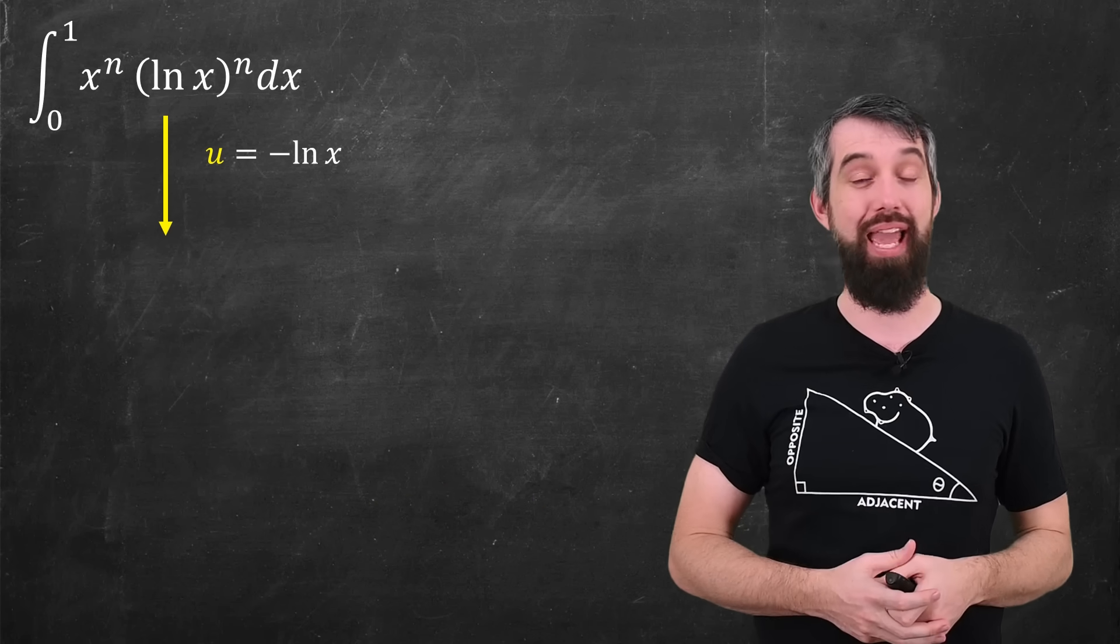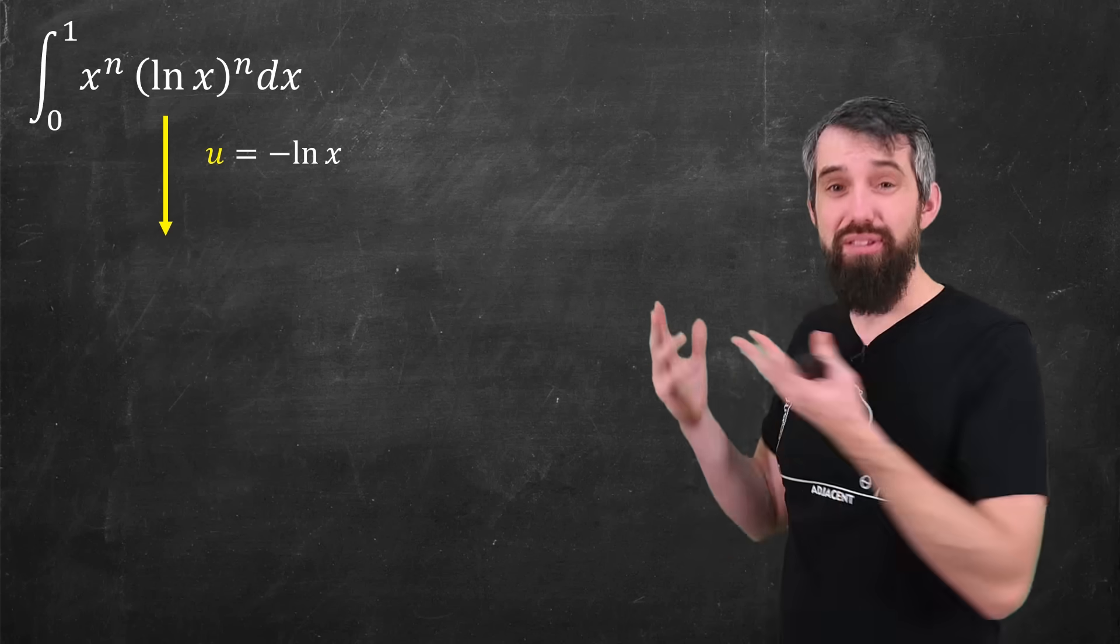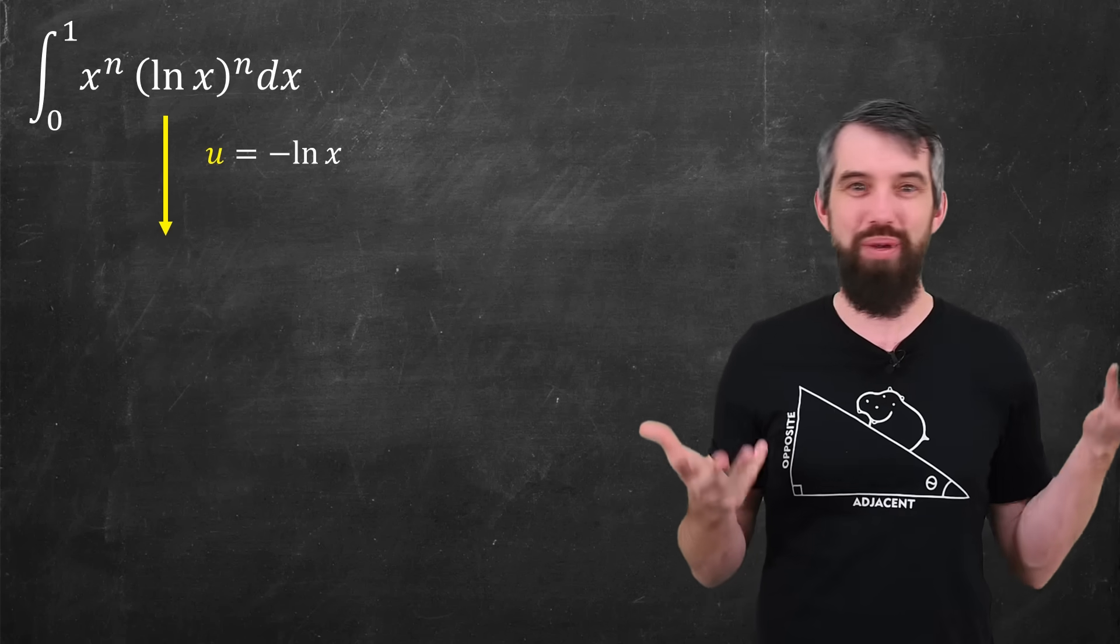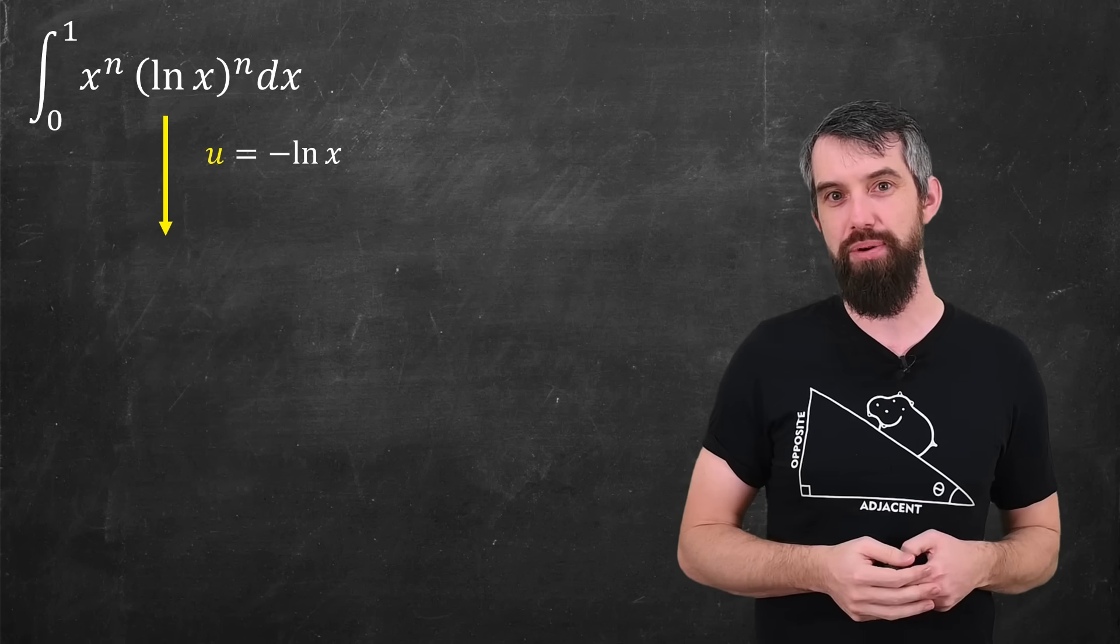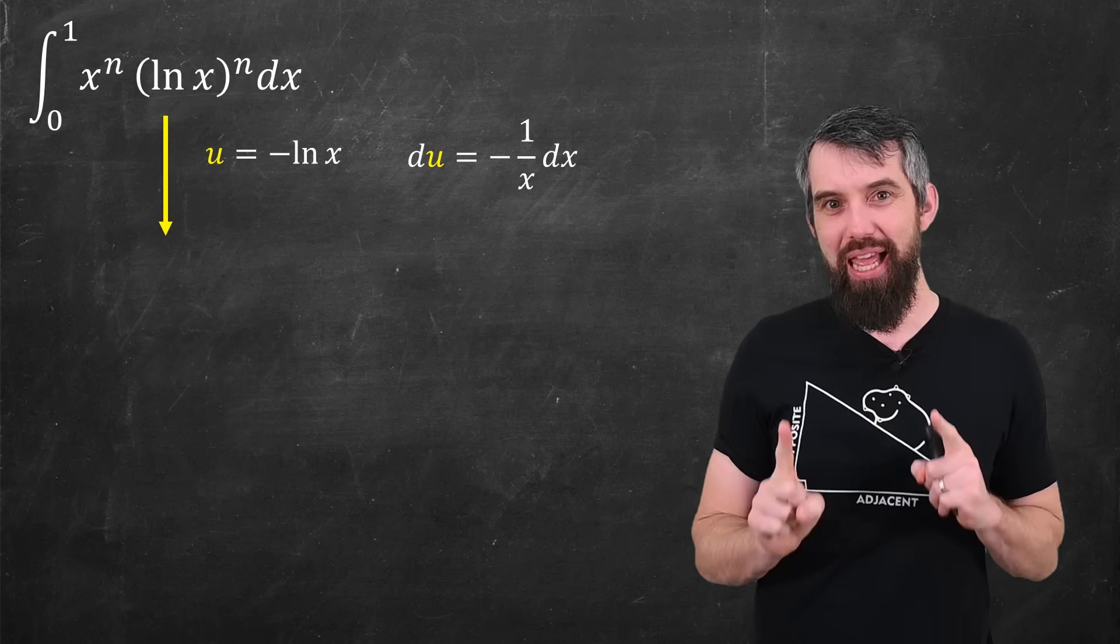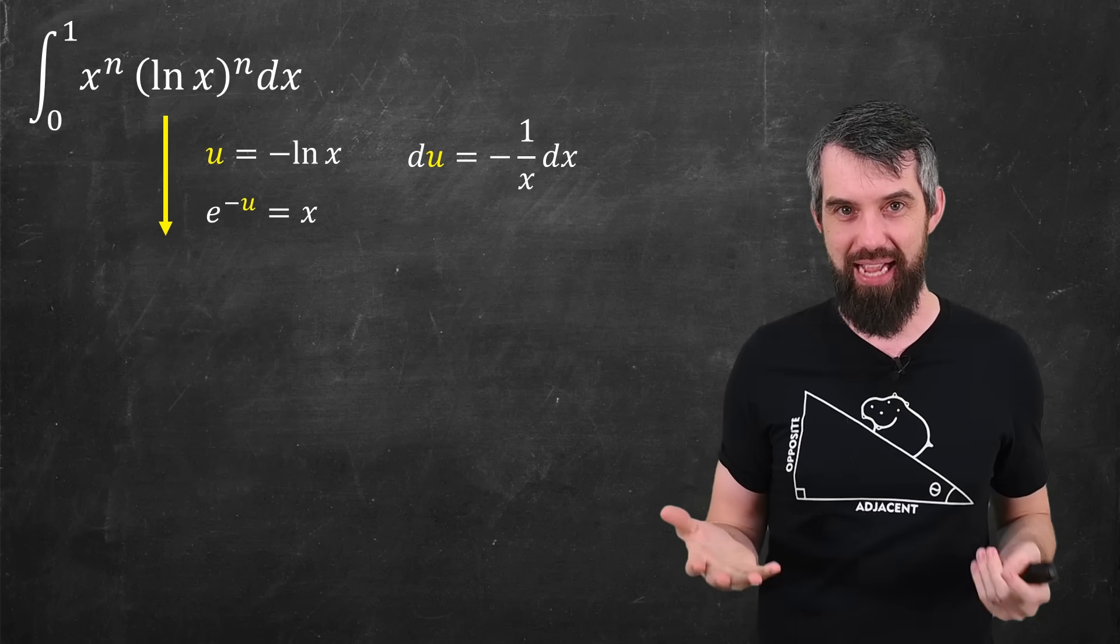So, how about this as a first possible guess? u is negative logarithm of x. I chose the logarithm, because obviously there's lots of logarithms in my integral, and then I made it negative logarithm of x, because between 0 and 1, I know that logarithm is going to be negative, so I just pull that part of it out. With that u, I can get that du is negative 1 over x, and I also like to switch the order around, solve for x, e to the minus u is x.